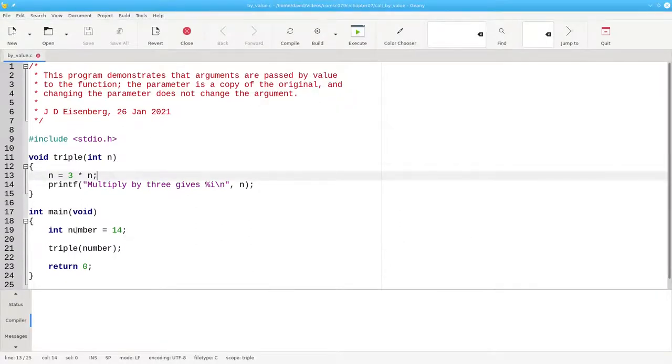What do you think will be in the variable number when we finish this code? Number is being passed in to parameter n, and we change n inside the function body. Will that change the value of the number variable?